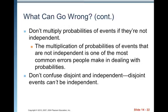Which brings us to another thing we need to watch out for. Don't confuse disjoint and independent events. Disjoint events can't be independent because once we know one occurs, the other one cannot occur. So they cannot be independent.